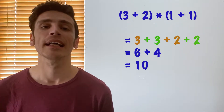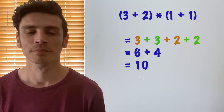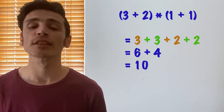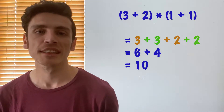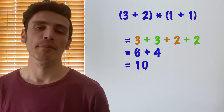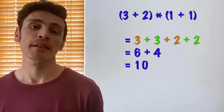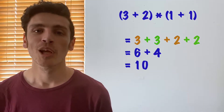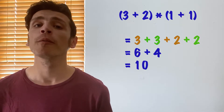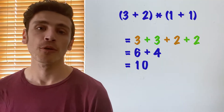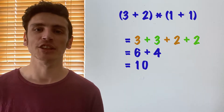So now we write it as 3 plus 3 plus 2 plus 2. This is all addition — there's no multiplication, there's no powers — so we don't need the brackets anymore. We can simply write it as 3 plus 3 plus 2 plus 2. Well, 3 plus 3 gives me 6, 2 plus 2 gives me 4, and then 6 plus 4 gives me 10. So we've got the exact same answer using distributive law.